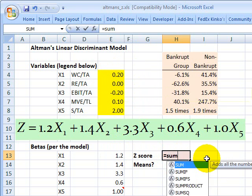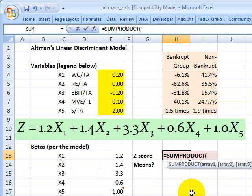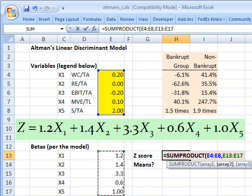In Excel, I can simply use the sum product formula, which takes this array, that's the company specific measures, and multiplies and adds by the betas here. So this sum product is taking the 0.2, multiplying by 1.2, adding the next product, 0 multiplied by 1.4, adding negative 0.2 multiplied by 3.3, adding 0.1 multiplied by 0.6, and finally adding 2 multiplied by 1. So the sum product is executing this formula right here in light green.